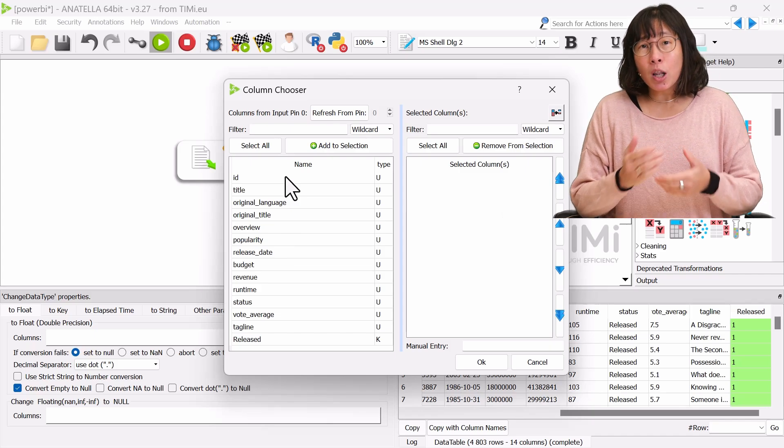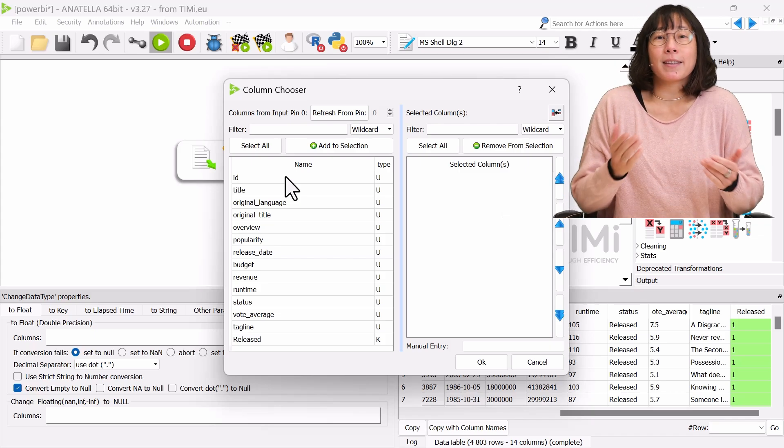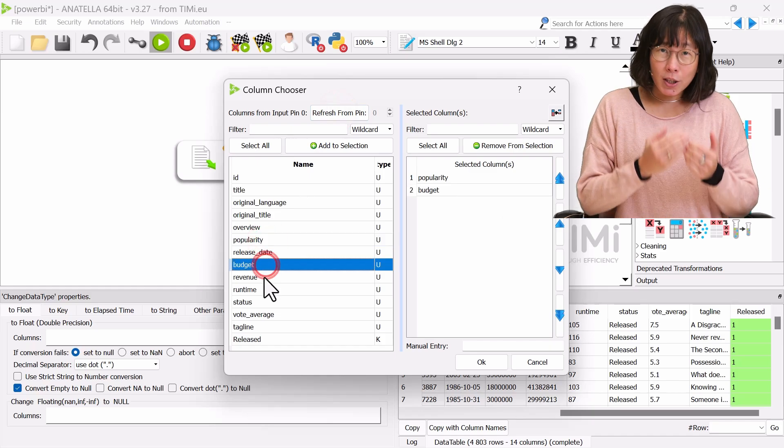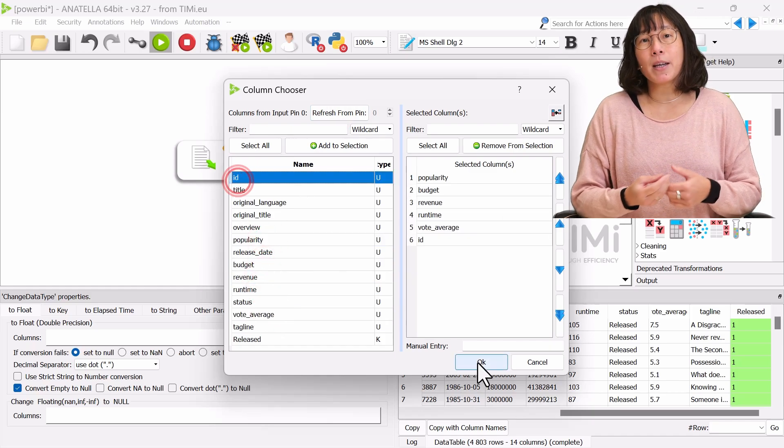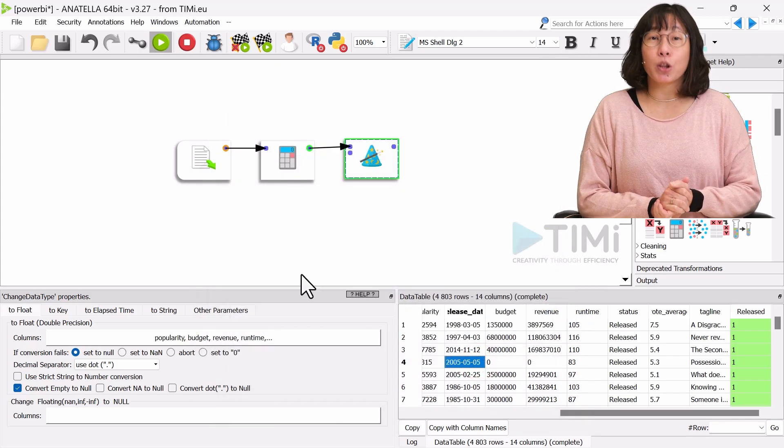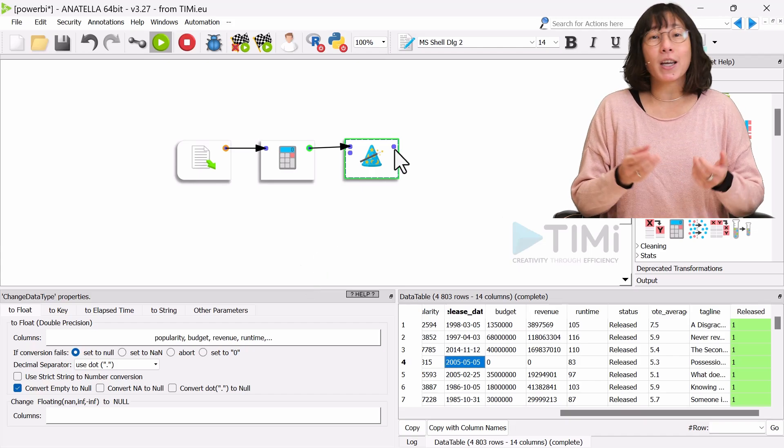Indeed, Anatella allows this operation on any columns regardless of their data type. So, we'll specifically convert columns like popularity, budget, revenue, runtime, and vote average to floating point numbers to enable the use of aggregation operators like sum and average in Power BI.